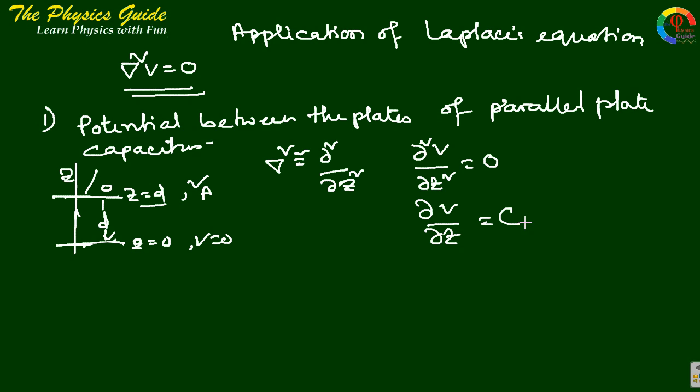Second integration gives V equals to c1 z plus c2, another constant. Our condition is at z equals to 0, V equals to 0. This implies 0 equals to c2, so c2 equals to 0.